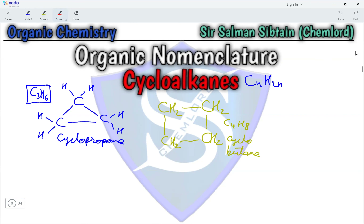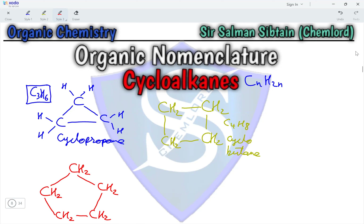The third compound in the homologous series of cycloalkanes contains five carbons in a cyclic ring, each carbon bonded to two hydrogen atoms — CH2, CH2, CH2, CH2, CH2 — forming a compound with the molecular formula C5H10, having a name of cyclopentane.